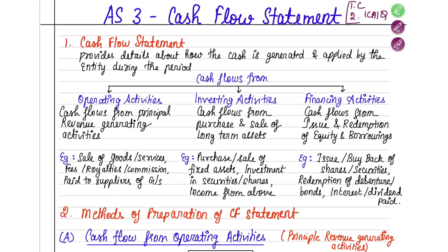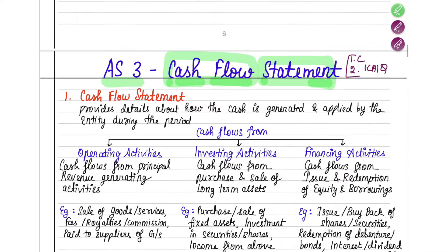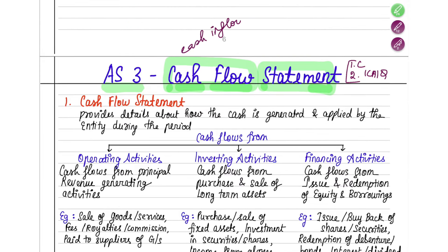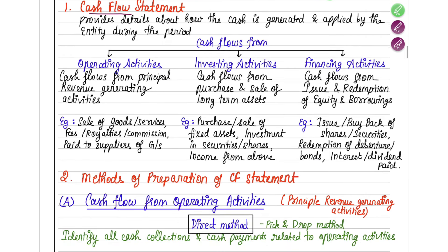AS3 deals with the Cash Flow Statement — a statement that tells you what are the cash inflows and cash outflows in a company during a year. The cash flow statement provides details about how cash is generated, from which activities you are getting cash, meaning what incomes you are receiving in cash, as well as how it is being applied — how you are spending it.